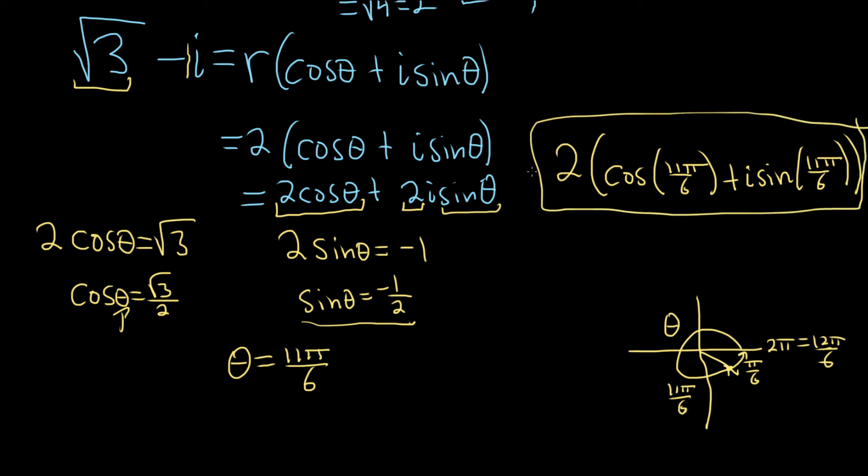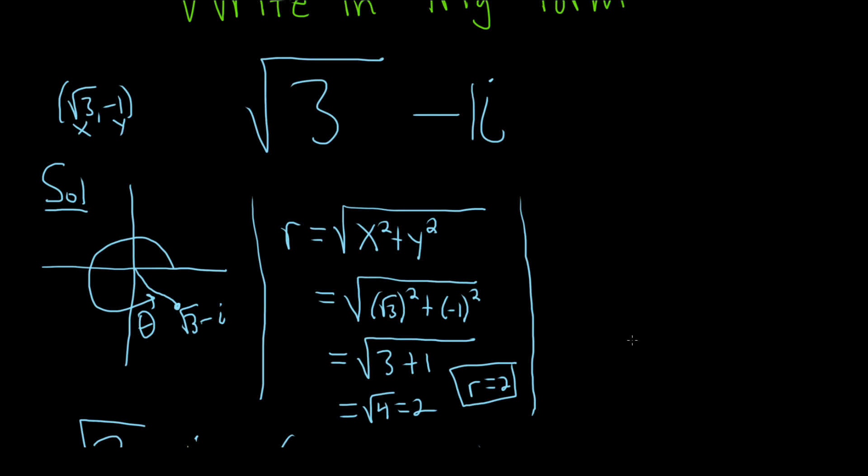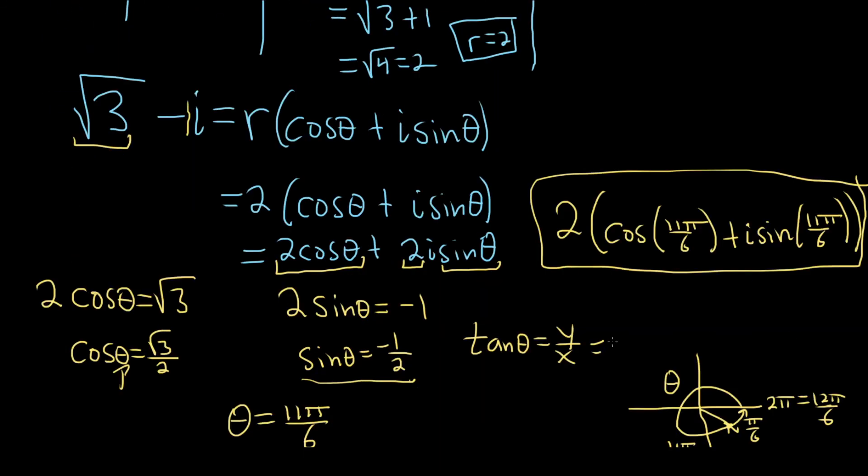Another way to do this problem, another way to find theta, is to use this formula here, the tangent of theta equals y over x. And if you do this, y in this problem, let me go back up and refresh your memory, y is negative 1 and x is the square root of 3. So you would get negative 1 over the square root of 3.